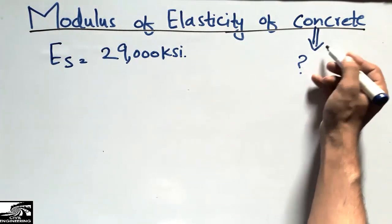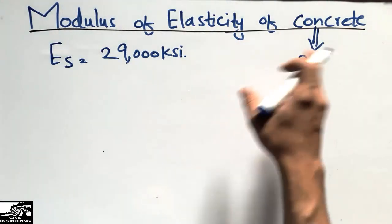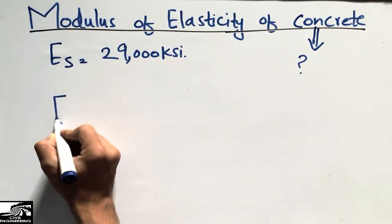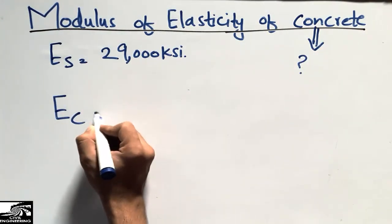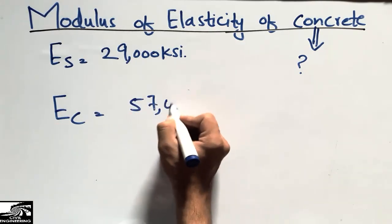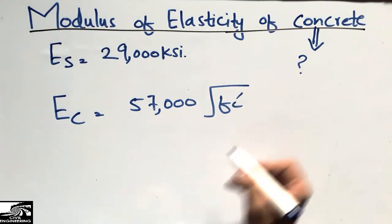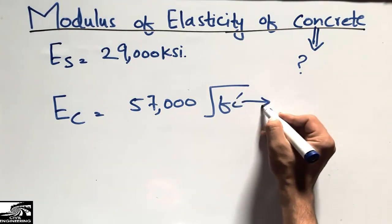We can find the modulus of elasticity of concrete by a famous relationship. There is a famous relation: Ec = 57,000 times the square root of f'c. So it depends on the concrete compressive strength.